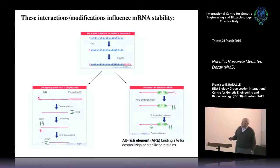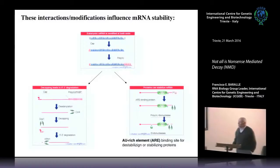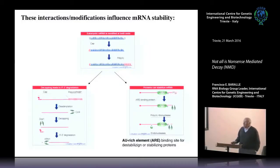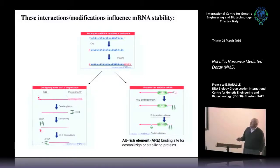The degradation of the RNA can occur in several ways. The RNA cap and the poly-A can be reduced in size, and several exonucleases will come from each end and degrade it. There are also cases where you get endonucleases, and then exonucleases working on the ends left free.